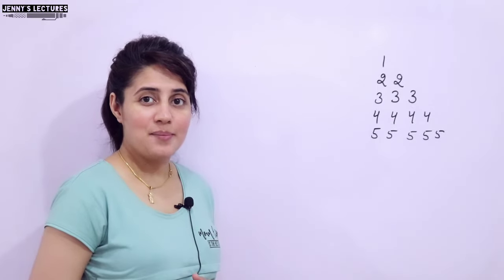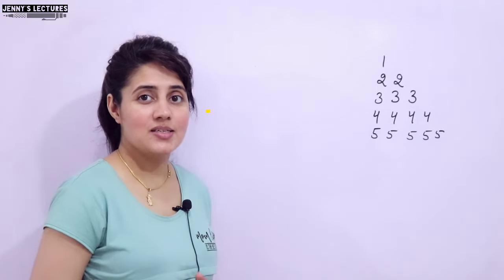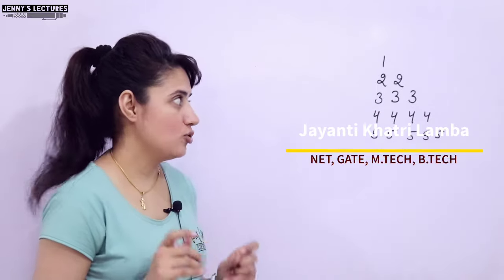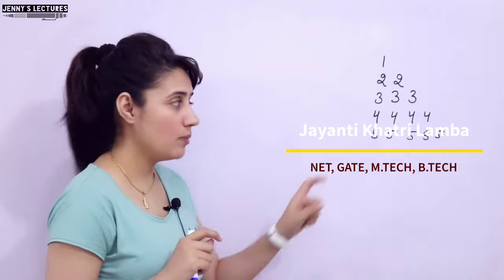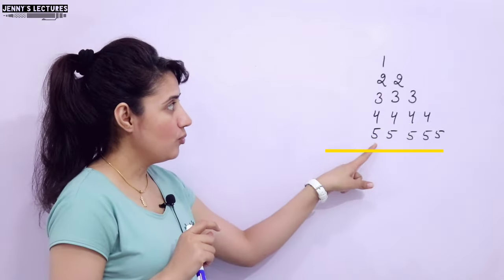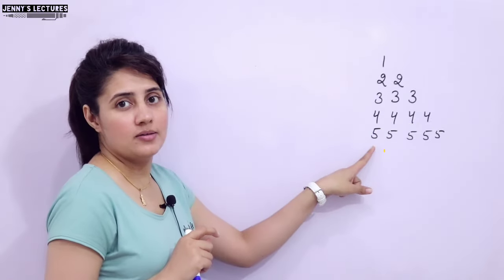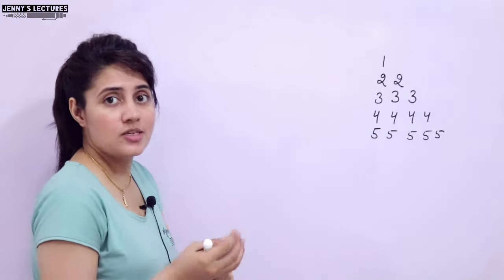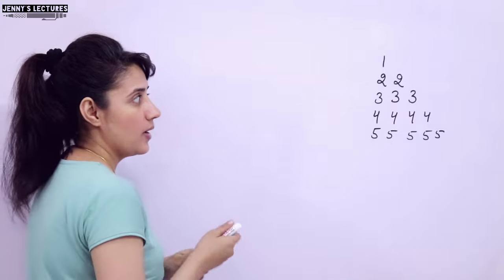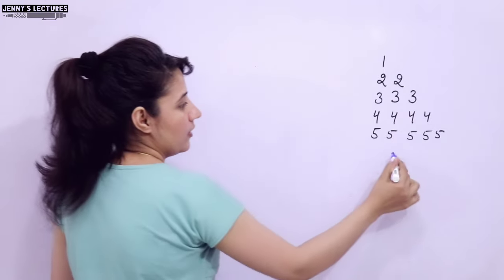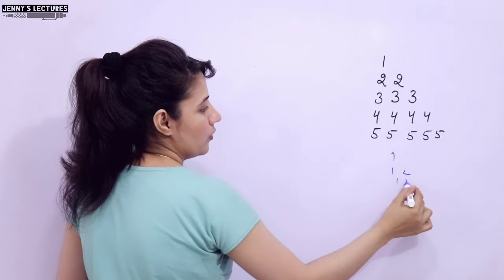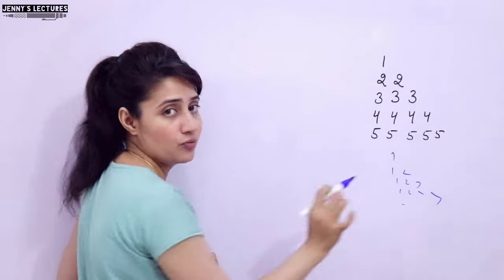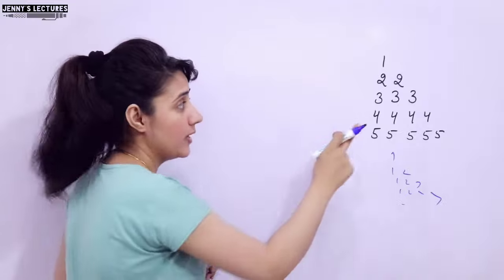In the series of learning programming in C, we are discussing printing pattern programs. In this video, I am talking about how to print a specific pattern. We have already discussed how to print a pattern like 1, then 1 2, then 1 2 3, then 1 2 3 4, then 1 2 3 4 5.